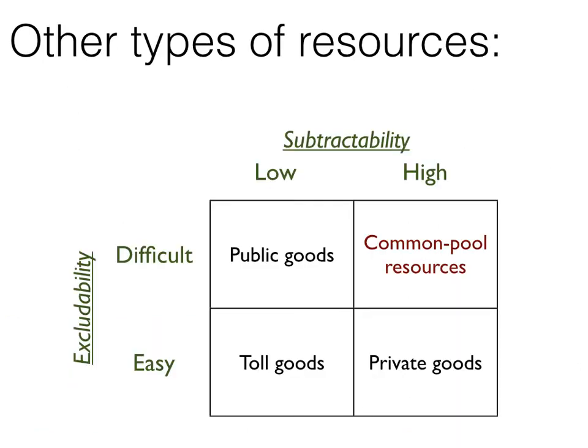Other types of resources can be organized into four areas on a grid. There are two key themes for common pool resources: they are difficult to exclude others from — so we see excludability difficult in the top row — and what other people take is subtractable to what you can take, so we have high subtractability. Other types of goods on this grid include private goods, which are easy to exclude and highly subtractable.